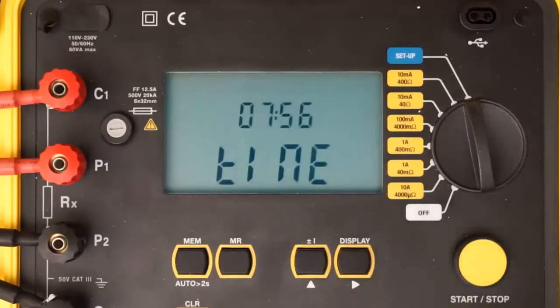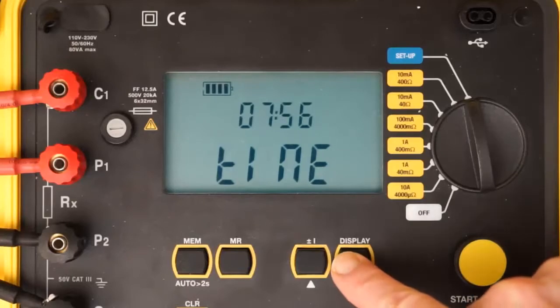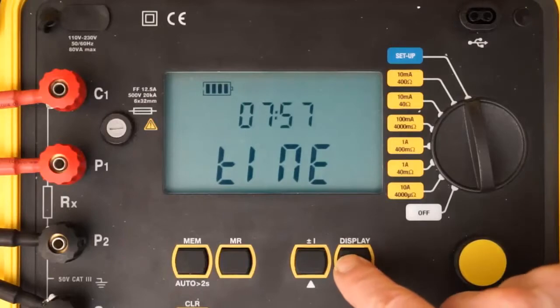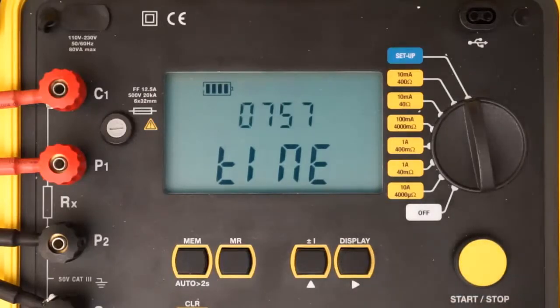For example, to review the instrument's time, press the right button once to display the current time setting. If this is incorrect, press and hold down the right button until the setting blinks. Then use the up button to change the setting. Use the right and up buttons to make any other required configuration modifications, as explained in the Model 6240 user manual.